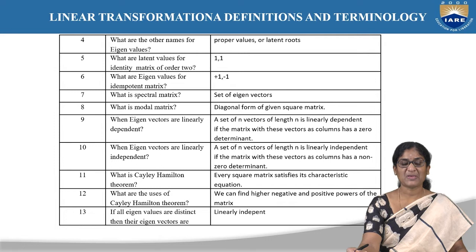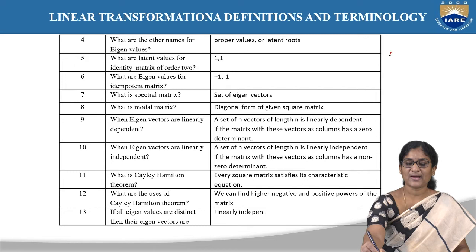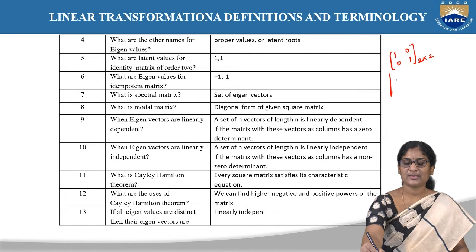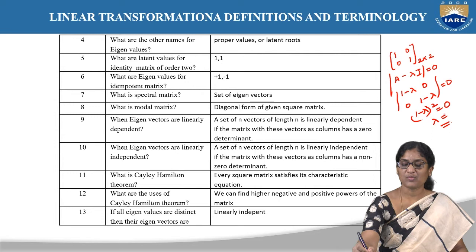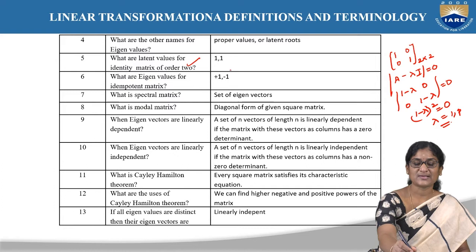What are the eigenvalues for the identity matrix of order 2? The 2×2 identity matrix is given by [[1, 0], [0, 1]]. To find the latent values, we use det(A − λI) = 0, which gives (1 − λ)² = 0, so λ = ±1. Since λ = 1 is repeated twice, the eigenvalues of the identity matrix are 1, 1.